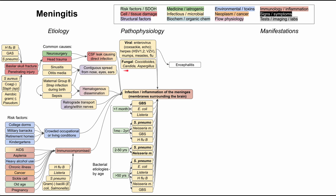You can also have fungal meningitis, which is less common. Fungal species include Candida, Aspergillus, or Coccidioides. There are also non-infectious causes of meningitis — in these cases it is inflammation only, with no infectious etiology. Sarcoidosis can spread to the meninges. Tumor metastases can spread to and irritate meningeal layers. Certain drugs have also been reported as causes, including NSAIDs and sulfa drugs.